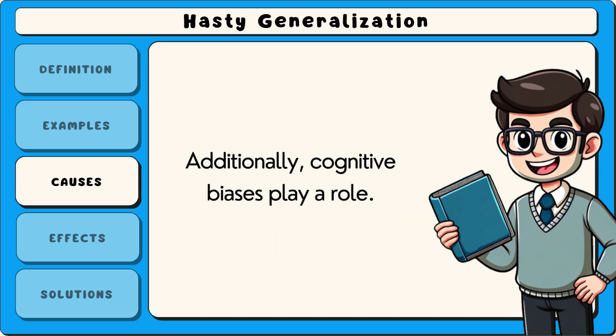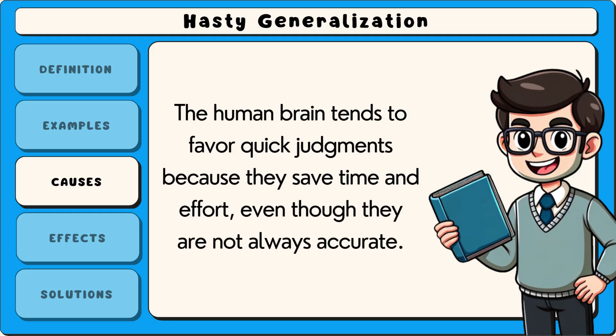Additionally, cognitive biases play a role. The human brain tends to favor quick judgments because they save time and effort, even though they are not always accurate.